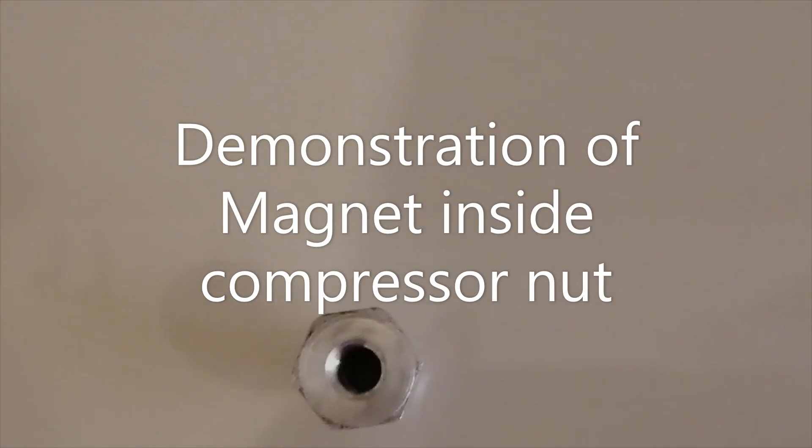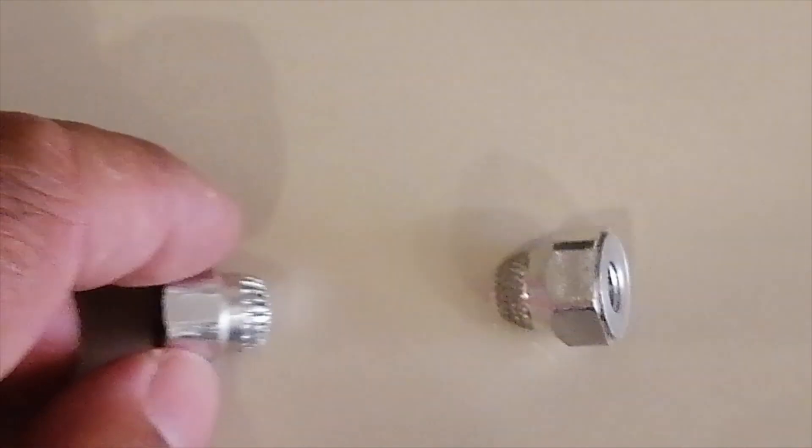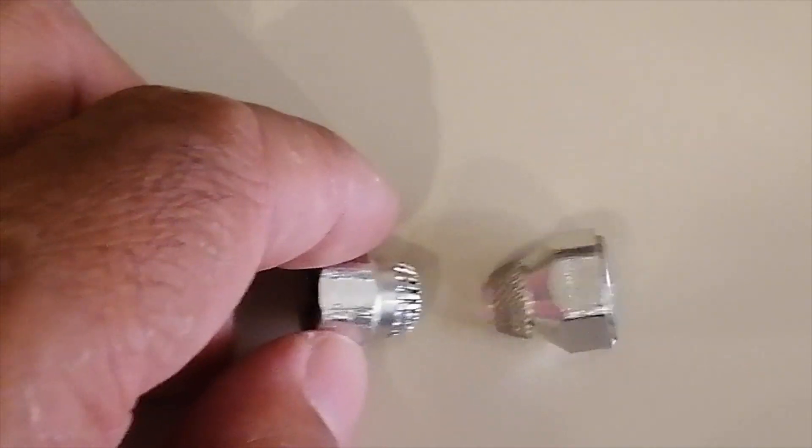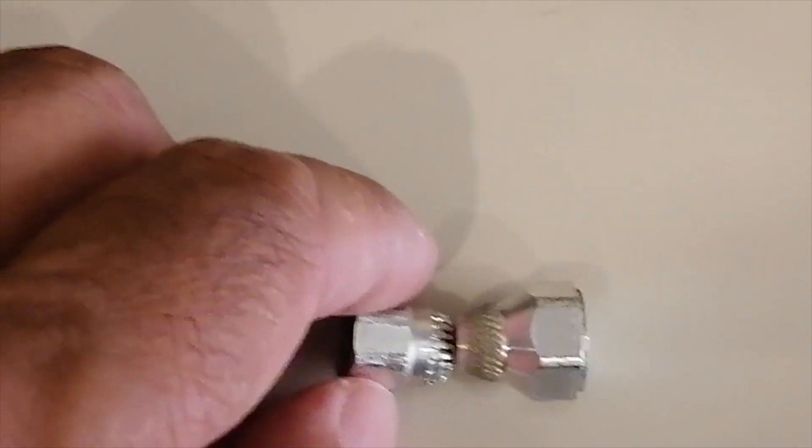Here is a demonstration of magnets inside the compressor nut. We have two compressor nuts, one with the magnet epoxied in place so it's not visible, and the other one where we have placed the magnet outside the epoxy so you can see it. When we bring these two compressor nuts together you'll be able to see that they both attract or repel each other, showing that both the compressor nuts have magnetic material inside them. Here you see how the two nuts attracted each other because of the presence of the magnets in both of them.